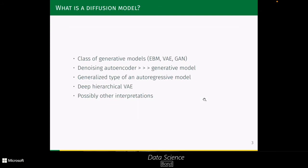So what are diffusion models? We can regard them as a class of generative models, like energy-based models, variational autoencoders, or GANs. Diffusion models take some denoising autoencoders and convert them into generative models. We can also regard them as a generalized type of autoregressive models, or as deep hierarchical variational autoencoders, among other interpretations.